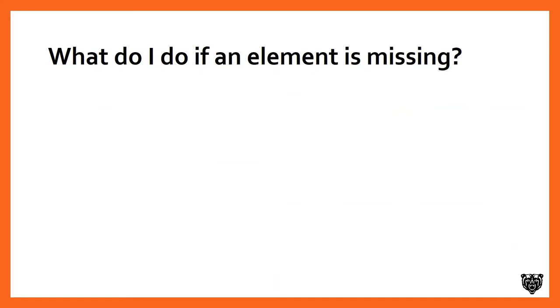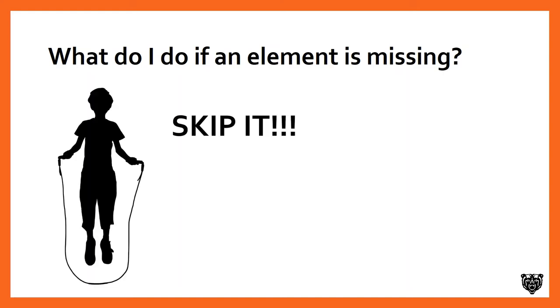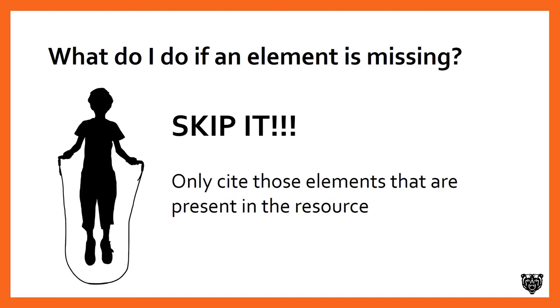A question I hear from students a lot is: what do I do if an element is missing? The answer is actually very simple — you skip it. You only need to cite the elements that are present in the resource that you're using.